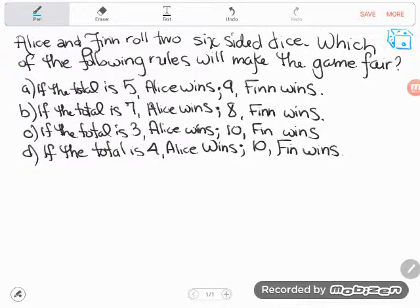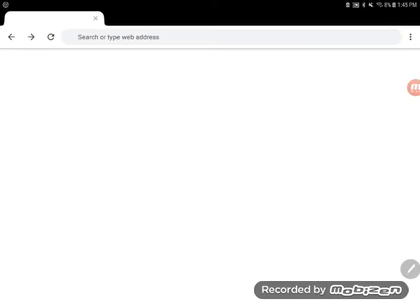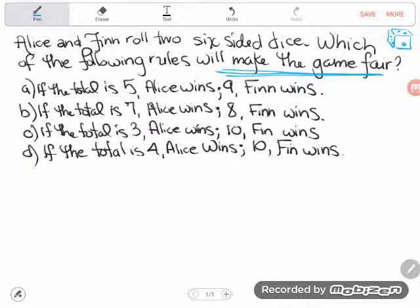And then it says, which of the following rules will make the game fair? That's an interesting question because they don't really say what they are looking for here. They're a little obscure about it. Which of the following rules will make the game fair, but I know that it's going to be fair if the odds are the same.